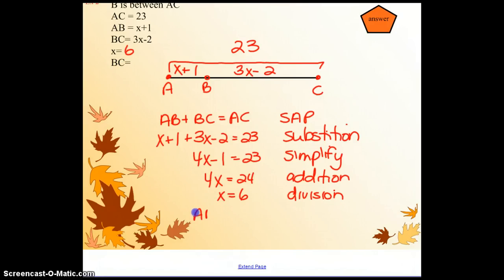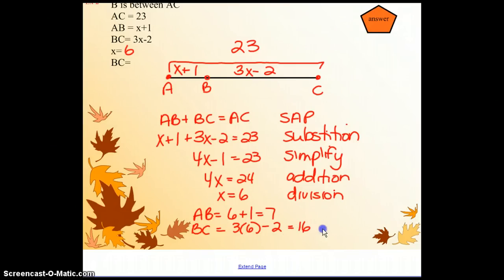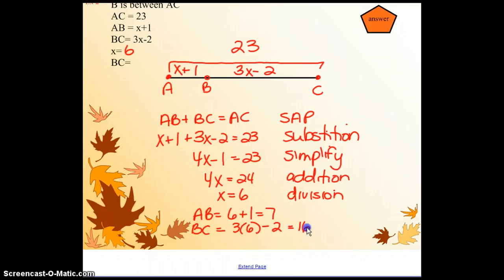Let's start. AB would be 6 plus 1, which is 7. BC would be 3 times 6 minus 2, which is going to give us 18 minus 2 is 16. And if we look, AB plus BC is 23 like we wanted, so we're in good shape. So we can say that BC is 16.